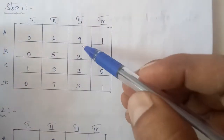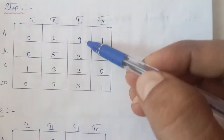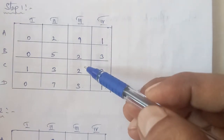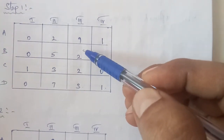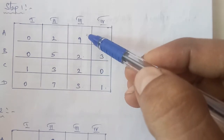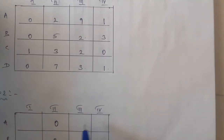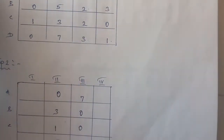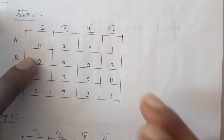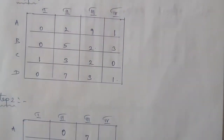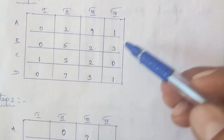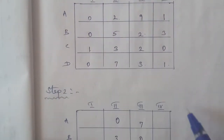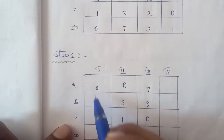Third column: least number is 2. Subtract 2 from each element: 2 minus 2 equals 0; 2 minus 2 equals 0; 2 minus 2 equals 0; 3 minus 2 equals 1. Fourth column: values give 0, 0, 1, 0 after reduction.